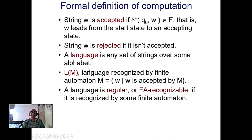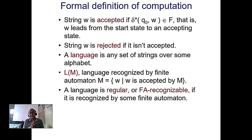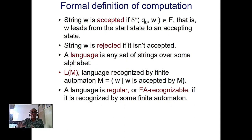A language recognized by a finite state machine is called regular, or finite-automata-recognizable. Even though it is a very simple model, it can cater to a lot of problems. Most problems can be solved with a regular language and a finite state machine — we do not need to touch higher machines like pushdown automata or Turing machines. Thank you.